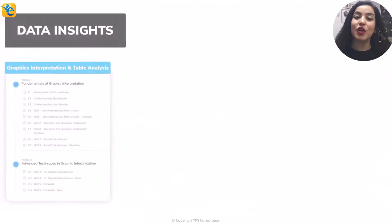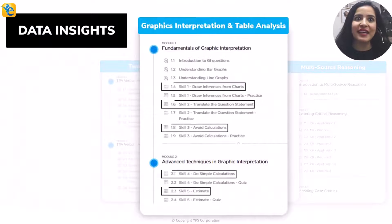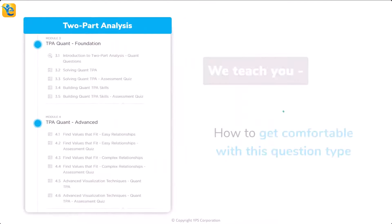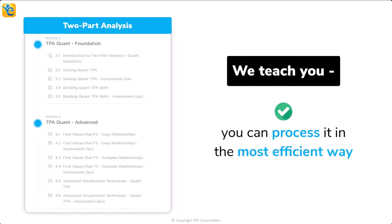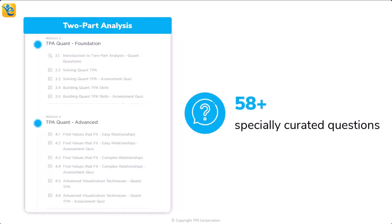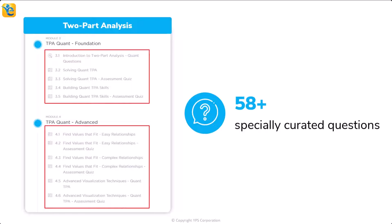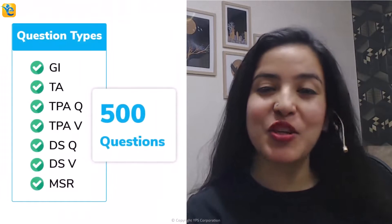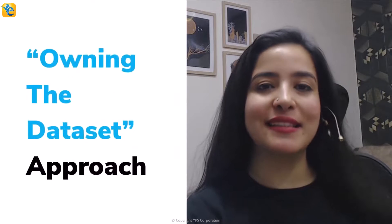Could you have arrived at this approach with such clarity without thoroughly understanding the data set first? That's the power of owning the data set. Our EGMAT Data Insights course teaches this skill through every guided and practice quiz. The two-part analysis course covers this question type with 58 specially curated questions at the right progression, building process skills of inference, translation, and visualization — across around 500 questions total.